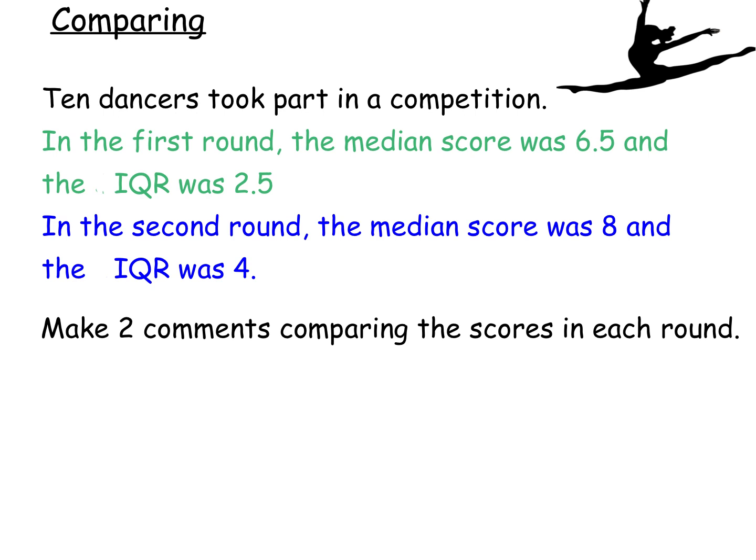Here are my two scenarios. Let's pretend we've already worked out the green part for part A, and the blue part was given for your part B. And then you're asked to make two comments comparing the scores. So we've got dancers in a competition. In the first round, the median score was 6.5, and the IQR is 2.5. In the second round, the median was 8, and the interquartile range was 4. So we have to make two comments.